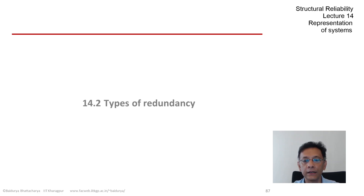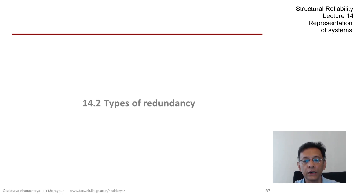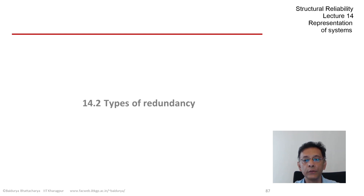We are going to look later at a very instructive example provided by Liu and Moses, where a girder bridge, because of over-optimization in member sizing, loses all structural redundancy and ends up with a system reliability equal to that of the critical girder.